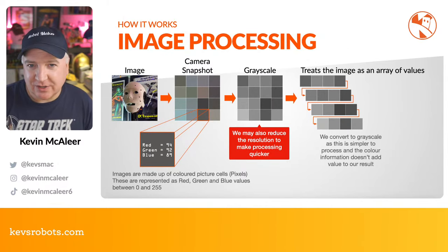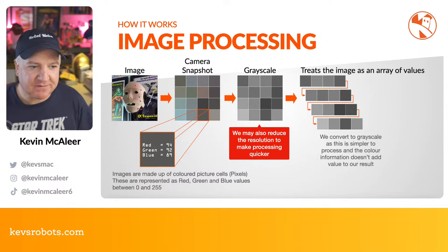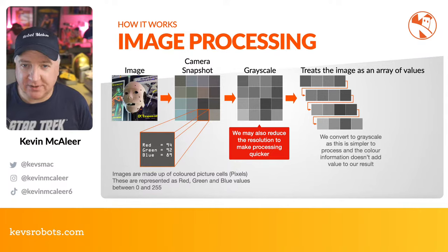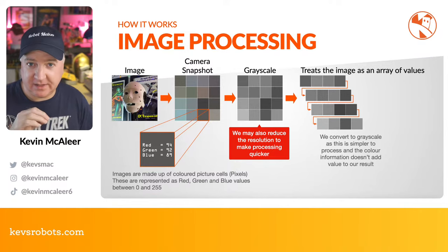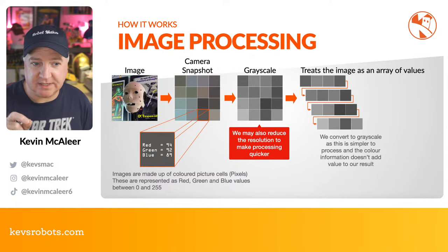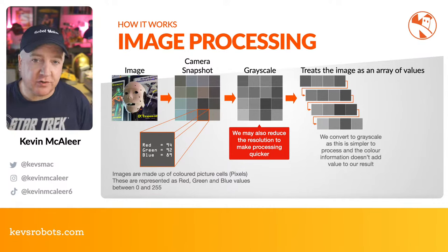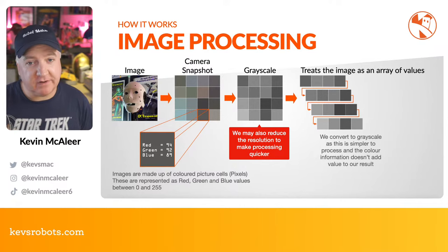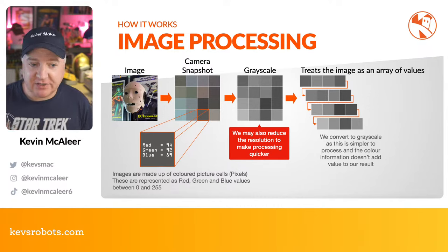Let's look at how image processing actually works behind the scenes. First we take a picture - a typical 1080p frame is 1920 by 1080 pixels, with three bytes per pixel for the RGB red, green, and blue values. For object detection we're often not interested in color at all, so one of the first steps is to make the image grayscale. That reduces it to a third of the original size, removing information we don't need, making it quicker to process and using less memory.